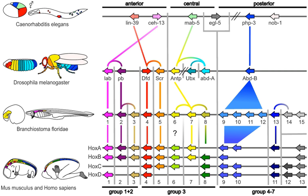Then, recombinant DNA technology at last brought embryology together with molecular genetics. A key early discovery was of homeotic genes that regulate development in a wide range of eukaryotes. The field is characterized by some key concepts which took evolutionary biologists by surprise.